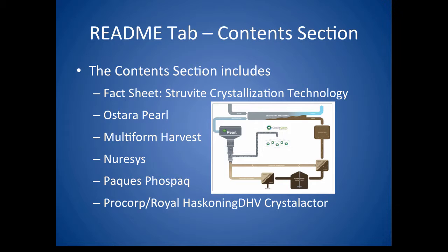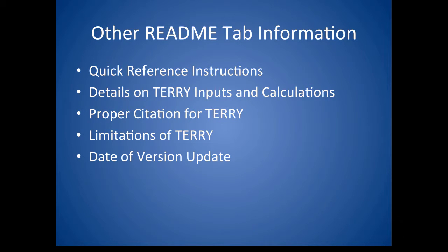The contents section contains links to technical reference documents that provide background information on some of the technologies that achieve struvite recovery. These process summaries include process flow schematics, product nutrient content, grain size, etc. Also, the struvite crystallization fact sheet includes contact information for the process manufacturers and a list of facilities and contact information where these processes are in operation.